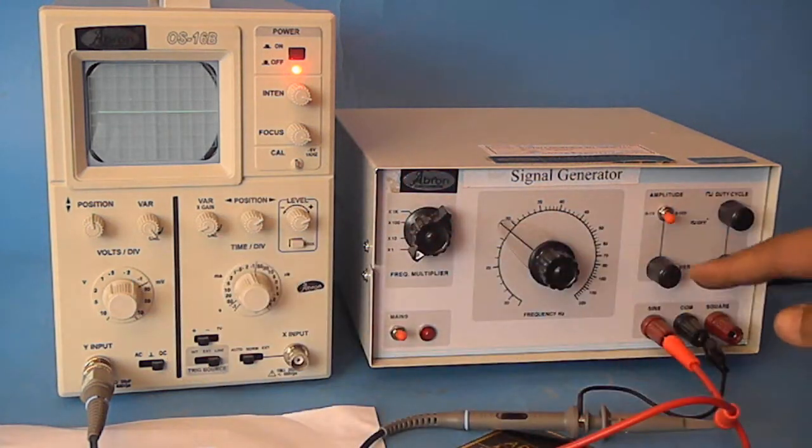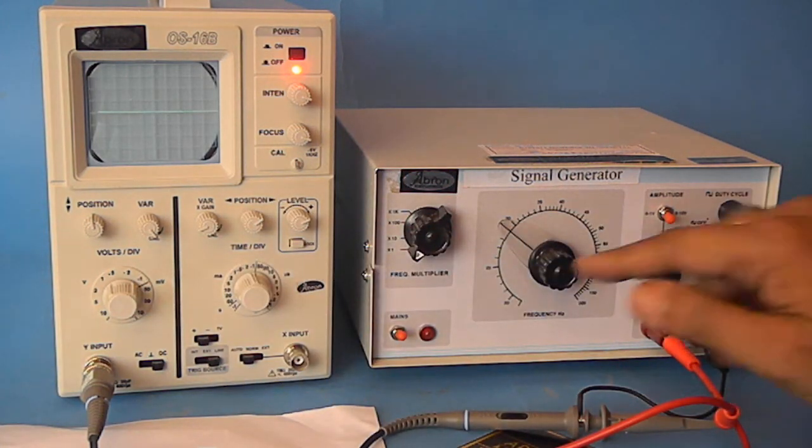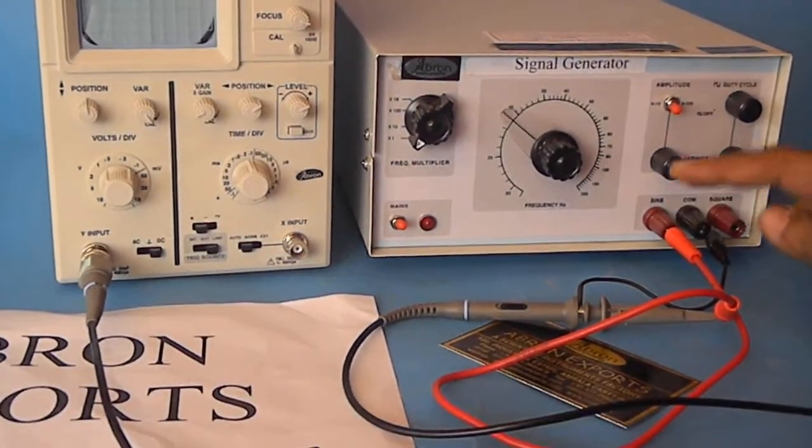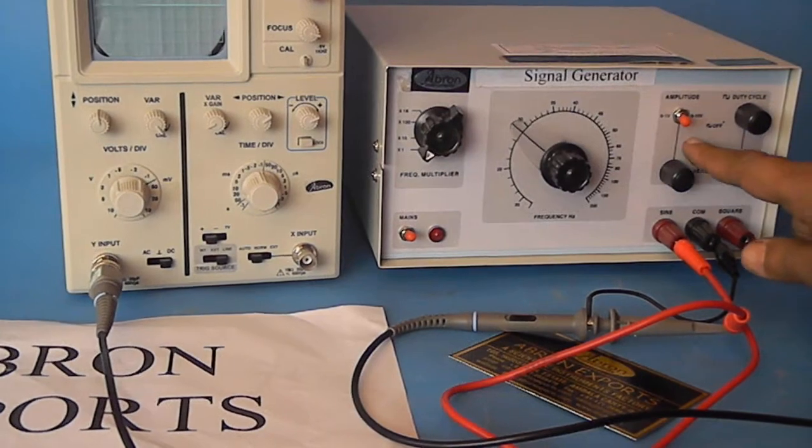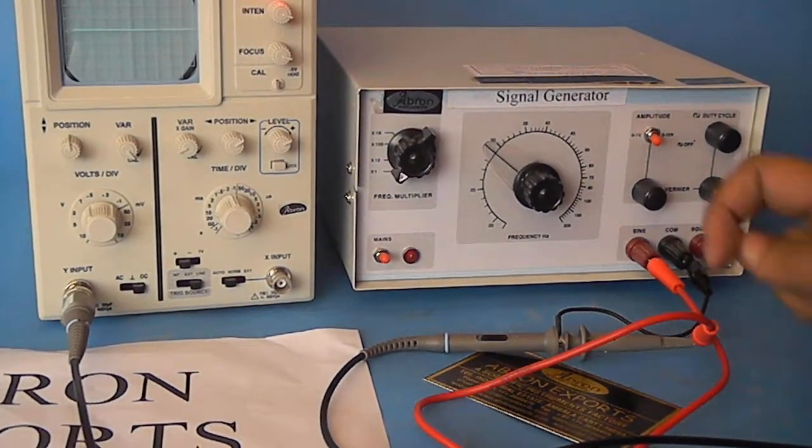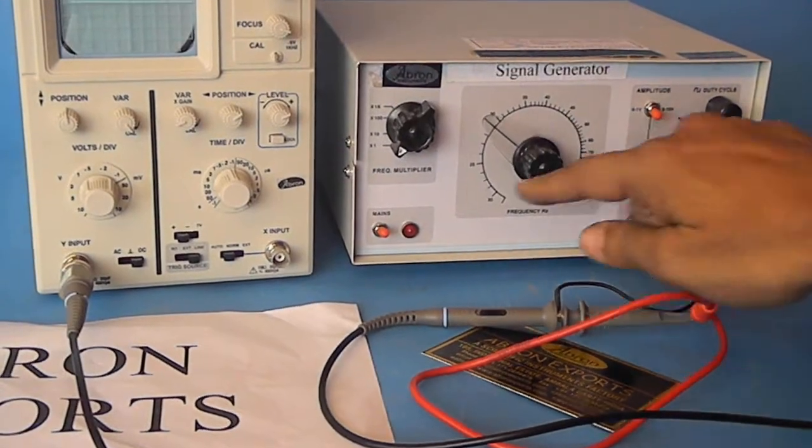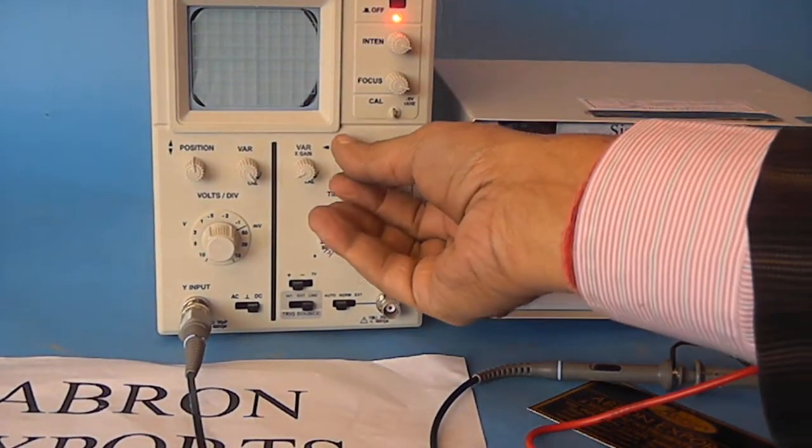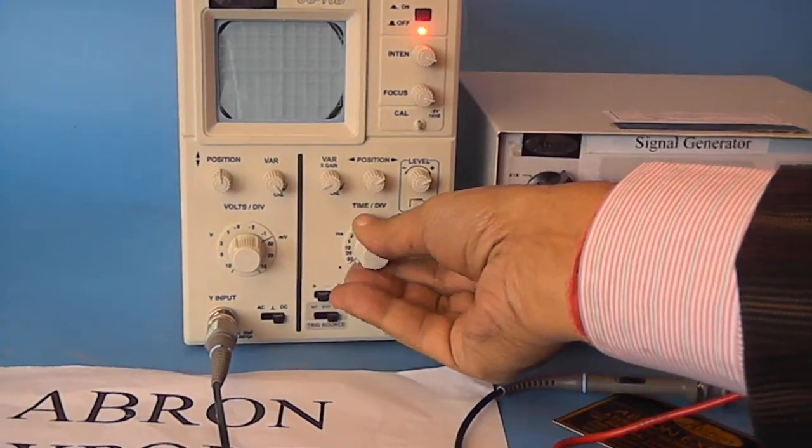First of all, you have to start it and then connect to the audio oscillator. I am connecting now with the audio oscillator by Abron Exports, 20 into 200 hertz and I am using the sine wave. One wire connected and another is earth. Now, if I switch it on, I can see the gain which is coming here.